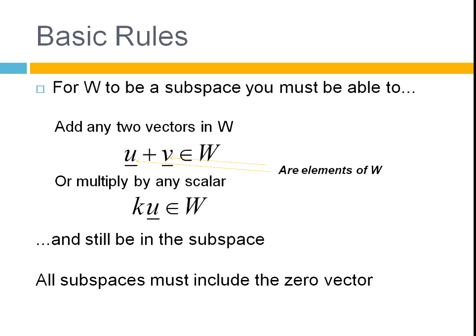Because if you multiply a constant times zero, then you're always going to get zero. So, if the zero vector is not there, there is a constant that you can multiply by and not be in the subspace.